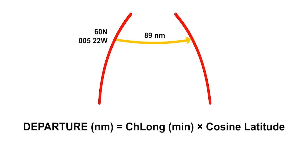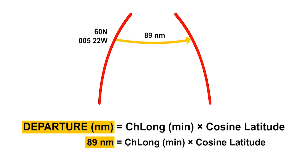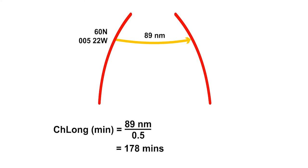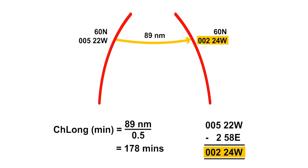Which of these do you know? The departure is 89 nautical miles. Substitute it into the equation. The latitude is 60 north. Its cosine is a half. Rearrange the equation. This gives 178 minutes of change of longitude. This is 2 degrees and 58 minutes from an initial longitude of 5 degrees and 22 minutes west. So, since we are going eastwards, it is 5 degrees 22 minutes west minus 2 degrees 58 minutes, which equals a new longitude of 002 degrees 24 minutes west. The new position is 60 north and 2 degrees and 24 minutes west.